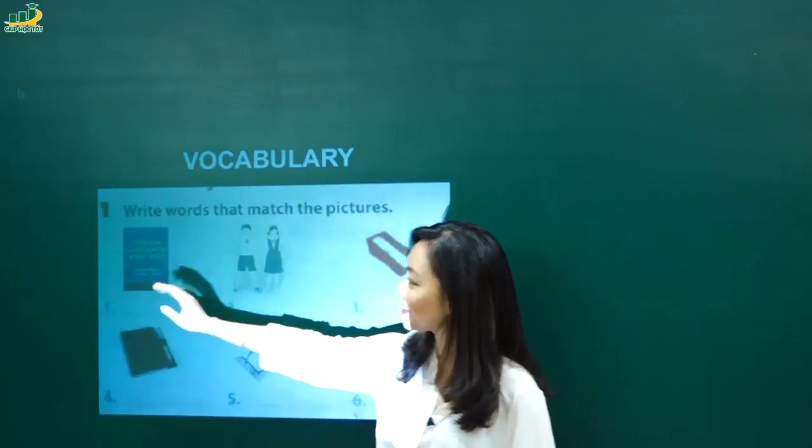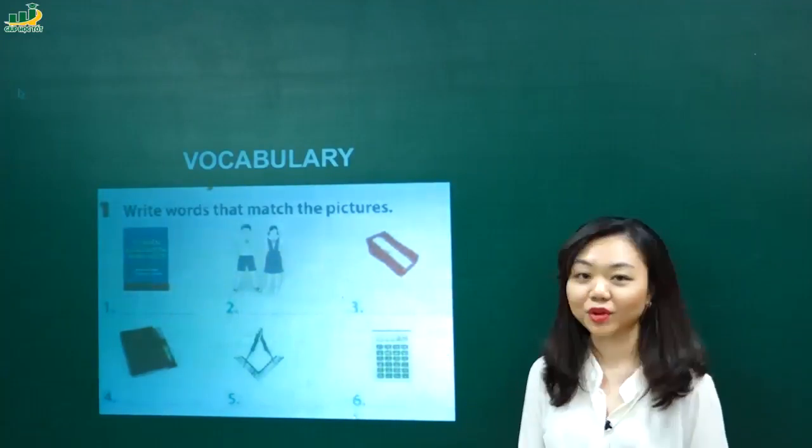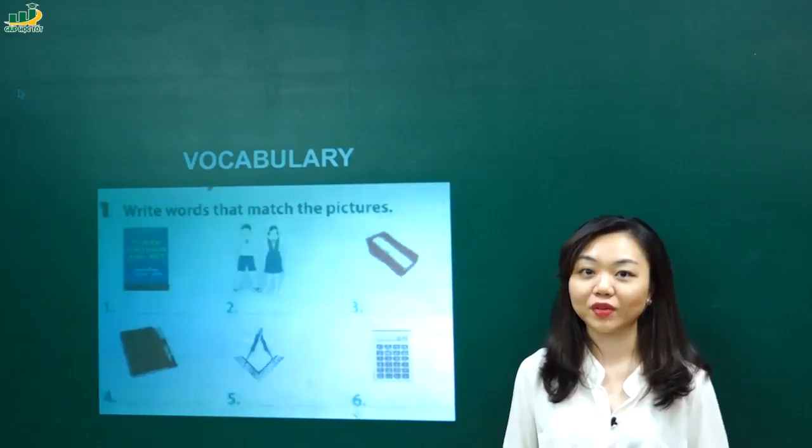Trên màn hình của em là có 6 cái hình, ảnh khác nhau của những đồ vật, đúng không nhỉ? Và bây giờ nhiệm vụ của mình là mình sẽ phải viết tên của những cái đồ vật đấy vào trong ô trống này. Ok, you write words that match the pictures. Nào, hình ảnh đầu tiên, number one, các em nhìn thấy là gì nhỉ? Nó chính là cuốn tử điện, đúng không? Cuốn tử điển các em còn nhớ, cuốn tử điển viết thế nào và đọc thế nào không?